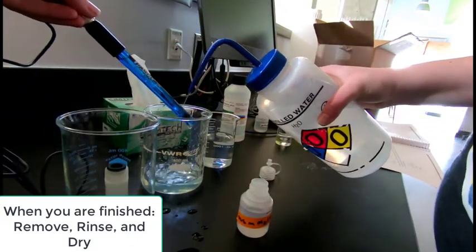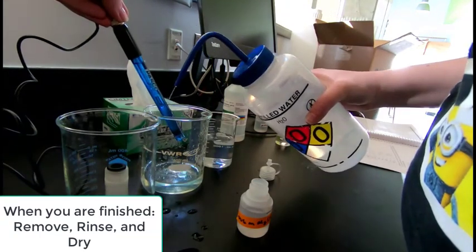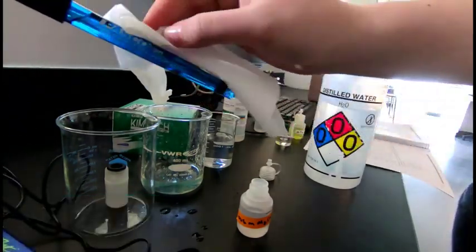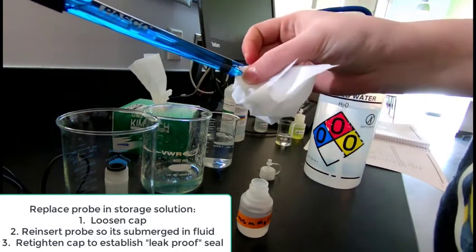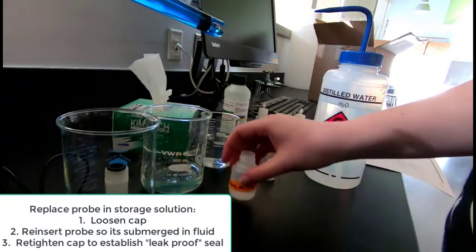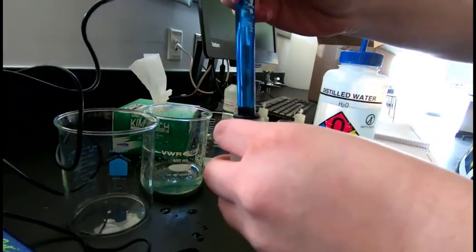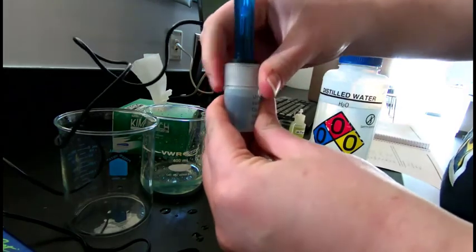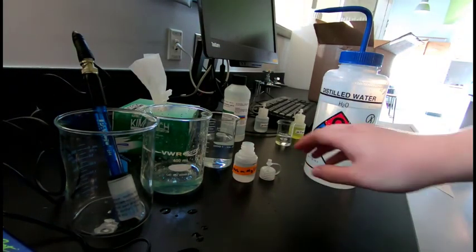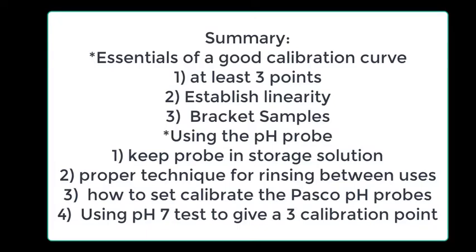So when you're done with the pH probe for the day, what you want to do is the same. Remove, rinse, and rinse it well. And then you're going to dry it off again with the chem wipes. We do more blotting than we do rubbing. And the last step is you want to put it back in the storage solution. So you want to loosen that cap up a little bit. That'll allow that O-ring to be open. You can replace that pH probe in there. Make sure it's below the solution level. And then when you tighten the cap, it's going to re-tighten the O-ring so that it's waterproof. And now you can store that. And if it falls over, you won't lose liquid. And then the inner liquid inside the pH probe won't leak out.